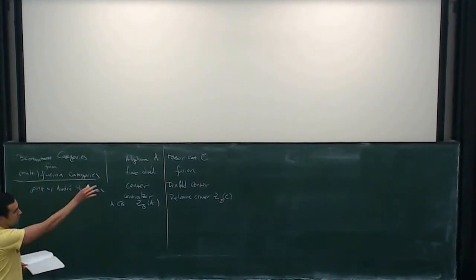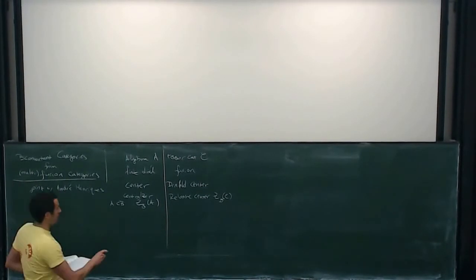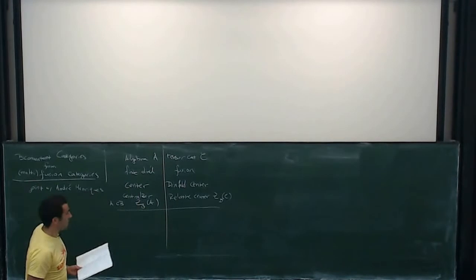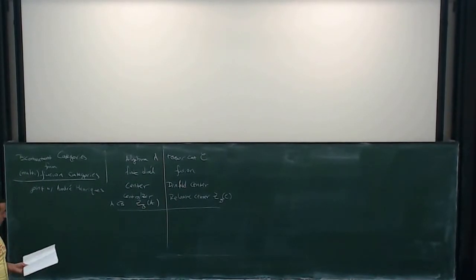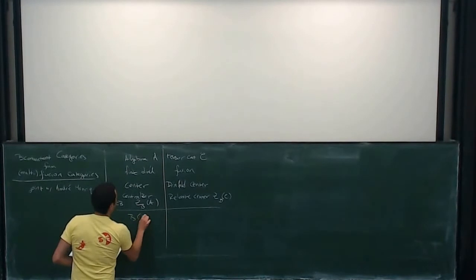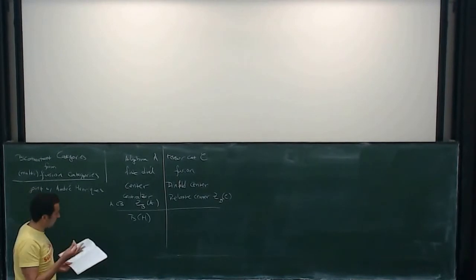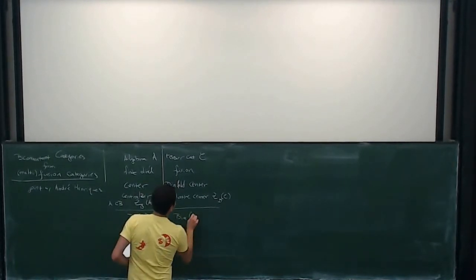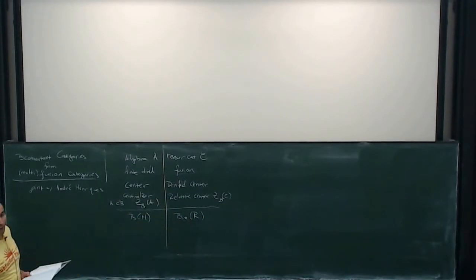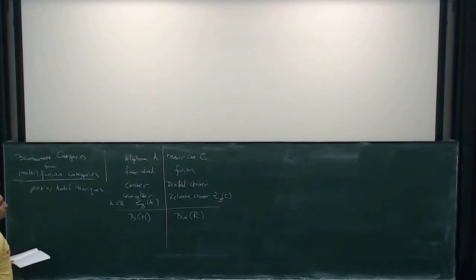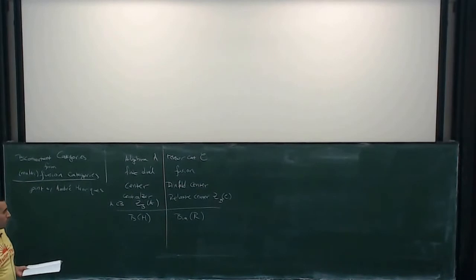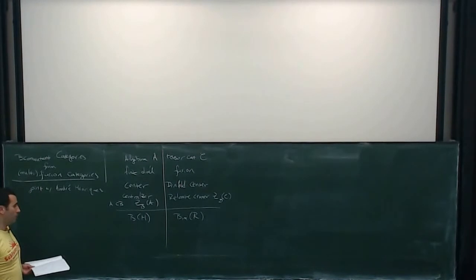We're now going to pass to the infinite dimensional case, to the world of von Neumann algebras. The von Neumann algebra analogue is B(H). The categorical analogy — and it's an analogy, not really categorification — is M_R, the category of bimodules over R. For me R is the hyperfinite II₁ factor; for André, motivated by conformal field theory, it's the hyperfinite III₁ factor. All of our proofs are independent of whether you're type II₁ or III₁. I like thinking about II₁s, so for me it's II₁.